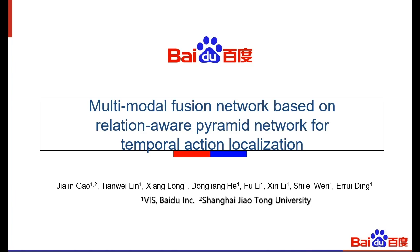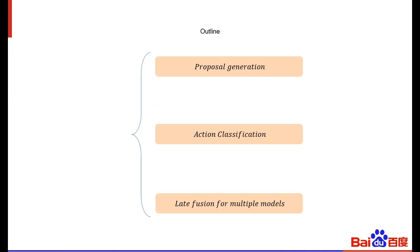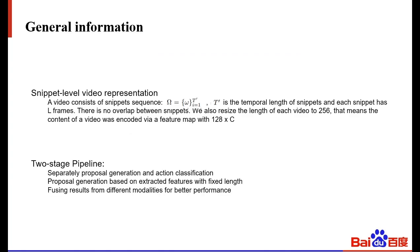Hi everyone, it's my honor to share our solution for all of you. We are the team from Baidu Vis and Shanghai Jiao Tong University. My name is Jia Ling Gao. In this challenge, we propose the multimodal fusion network based on relation-aware pyramid network for temporal action localization tasks. Our framework consists of three parts: proposal generation, action classification, and feature fusion for multimodals. Here we first show the general information in this challenge, then illustrate the framework and our lessons learned.